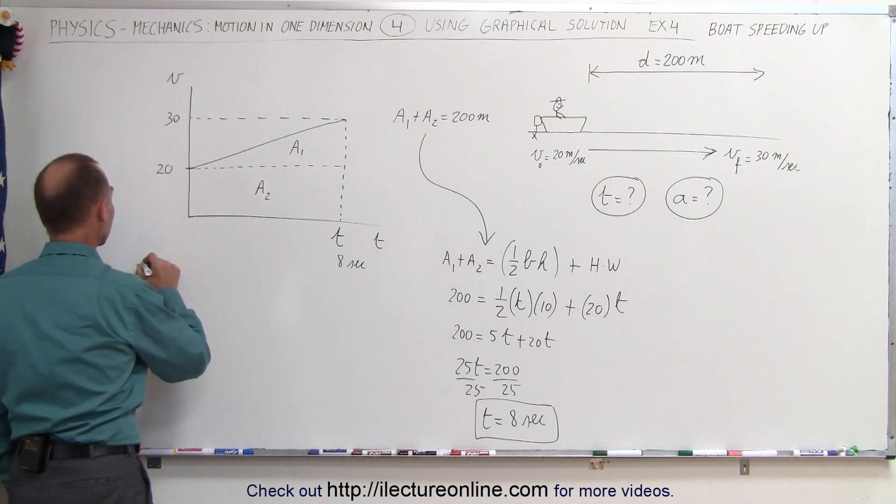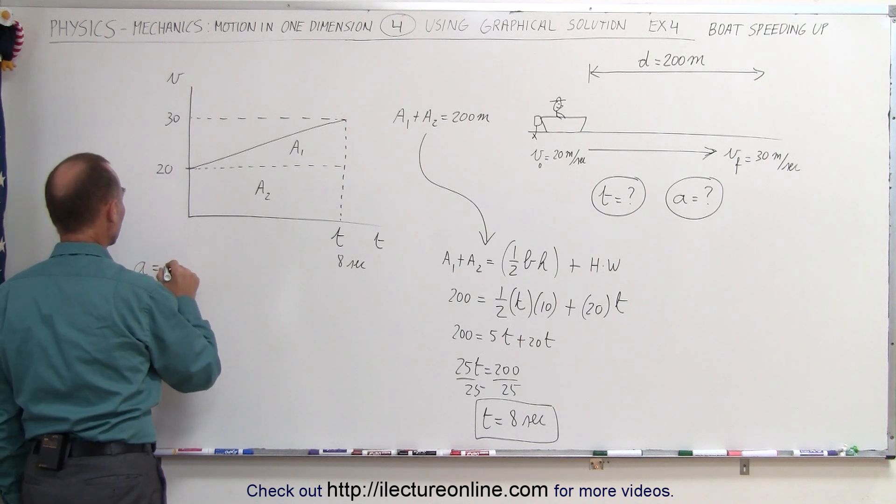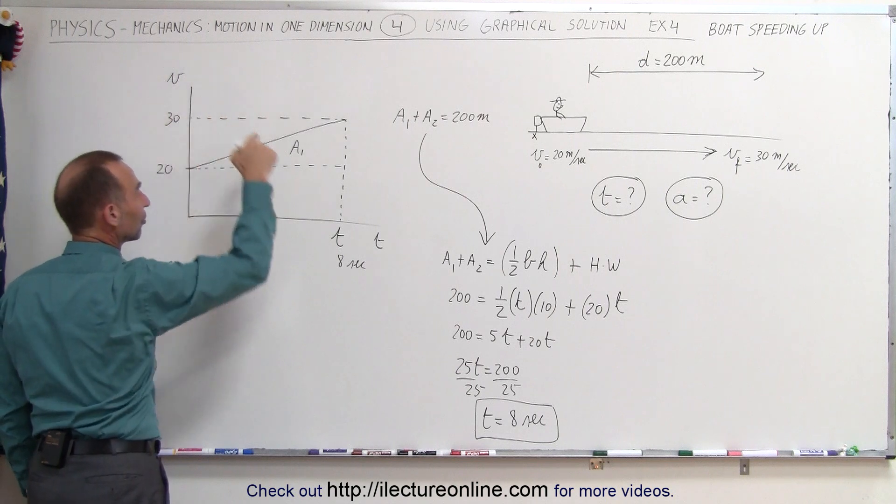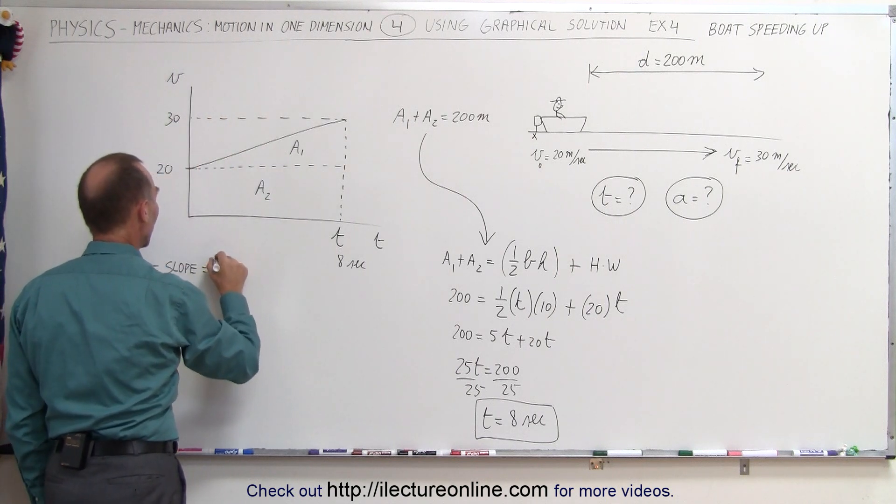Second answer we try to find acceleration. We know that acceleration is equal to the slope of a velocity versus time graph which is equal to the rise over the run.